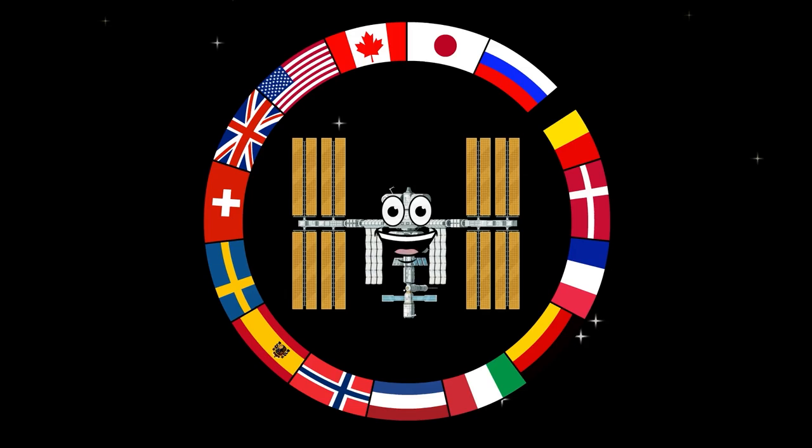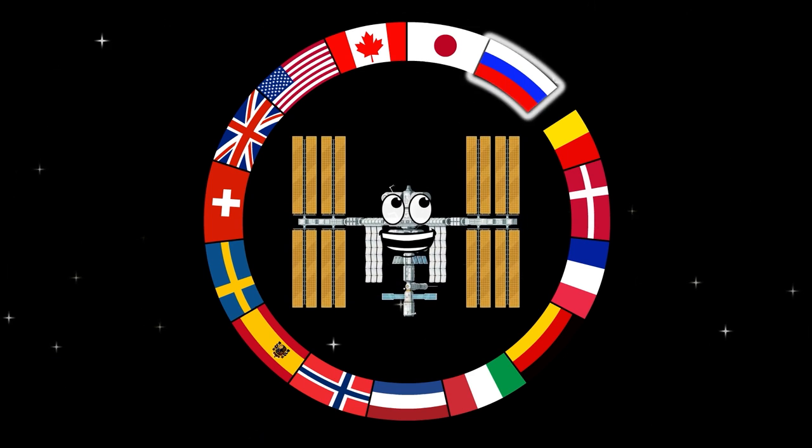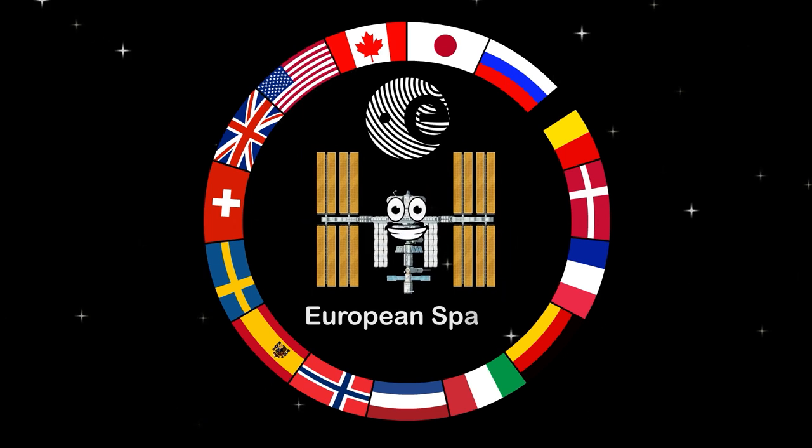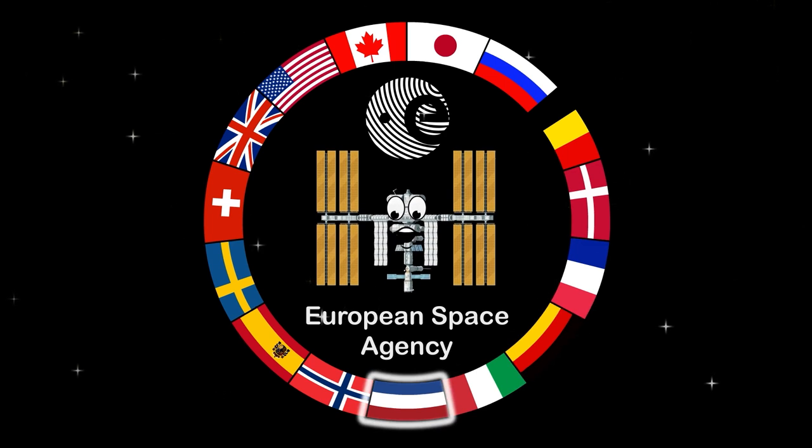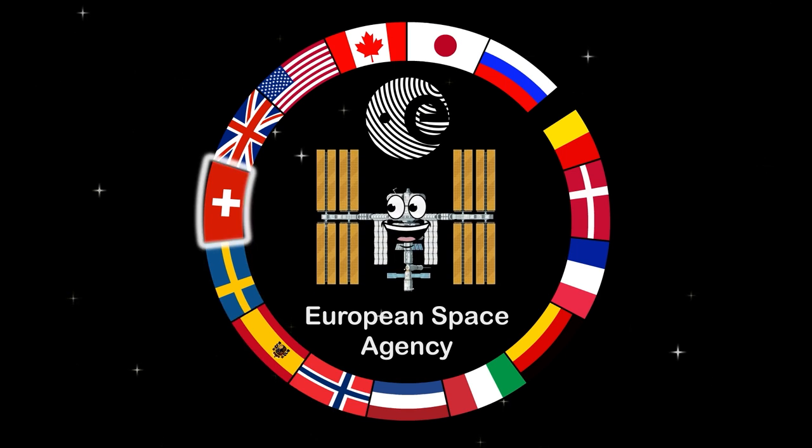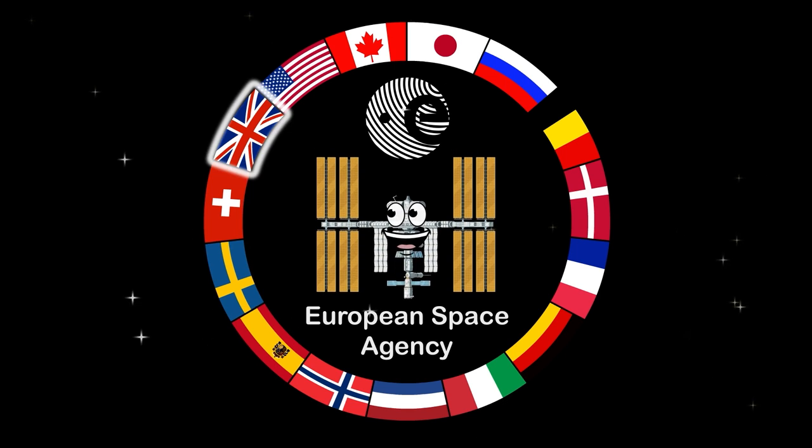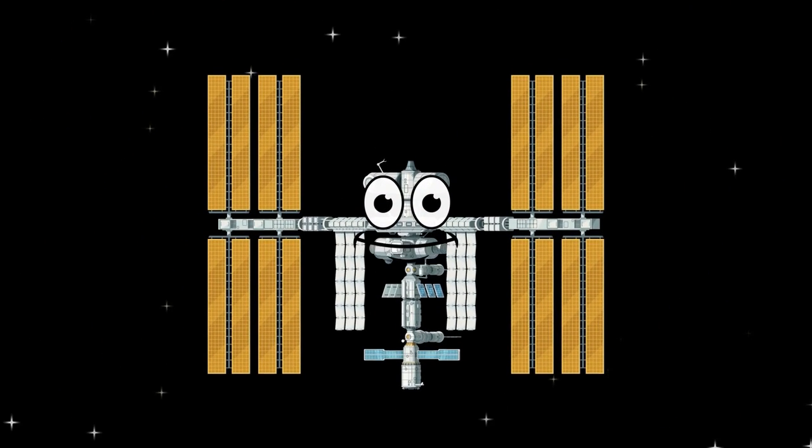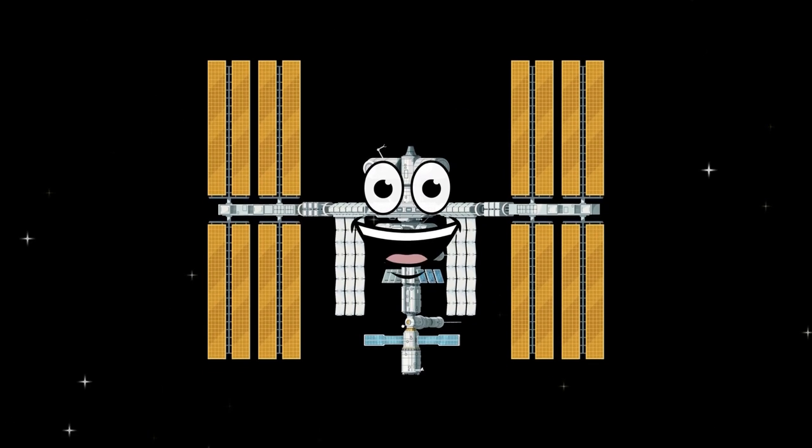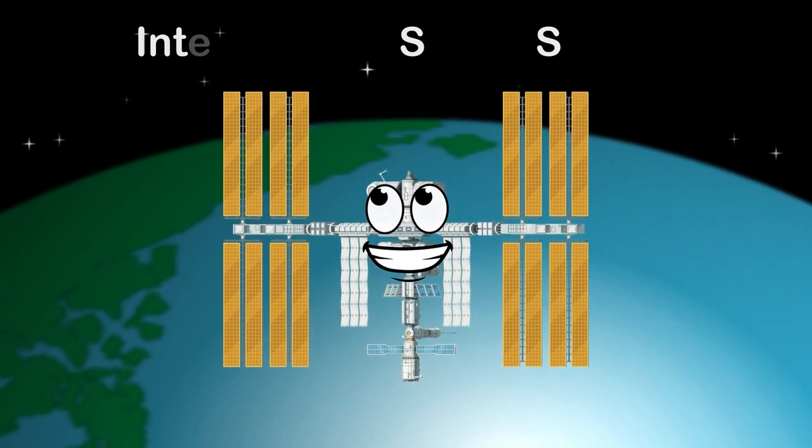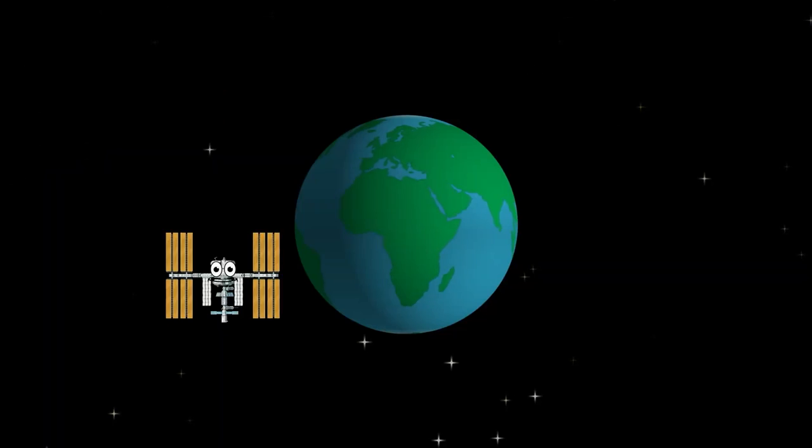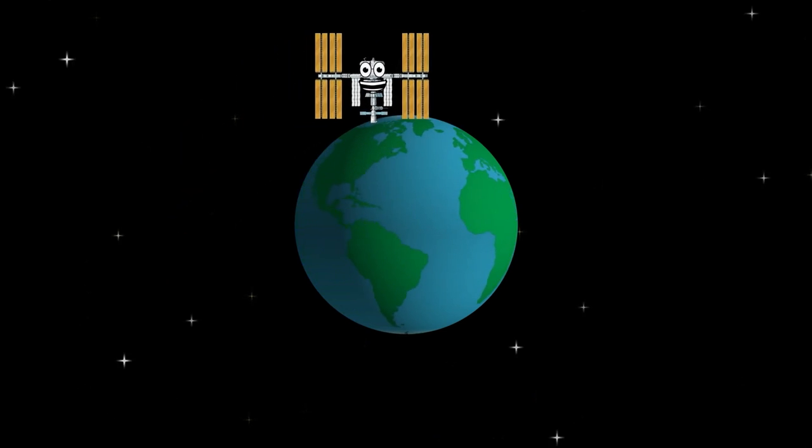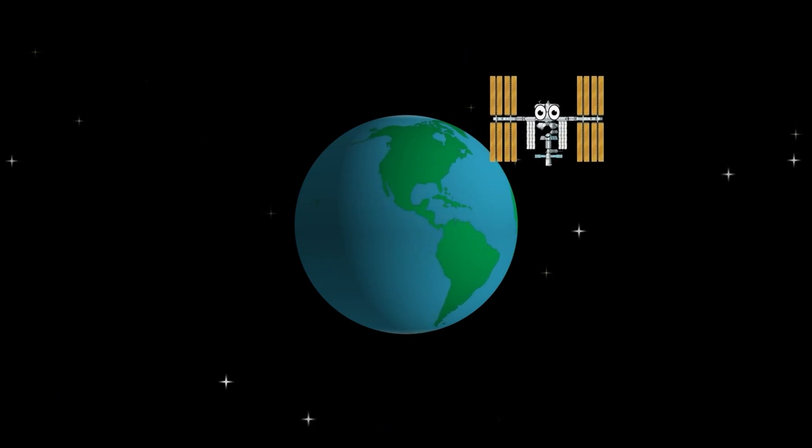The ISS consists of 15 nations: Canada, Japan, and the Russian Federation, the United States, and the European Space Agency. They are Belgium, Denmark, France, Germany, Italy, the Netherlands, Norway, Spain, Sweden, Switzerland, and the United Kingdom. Maybe you will have the chance to visit me someday and be another part of the ISS and its history.